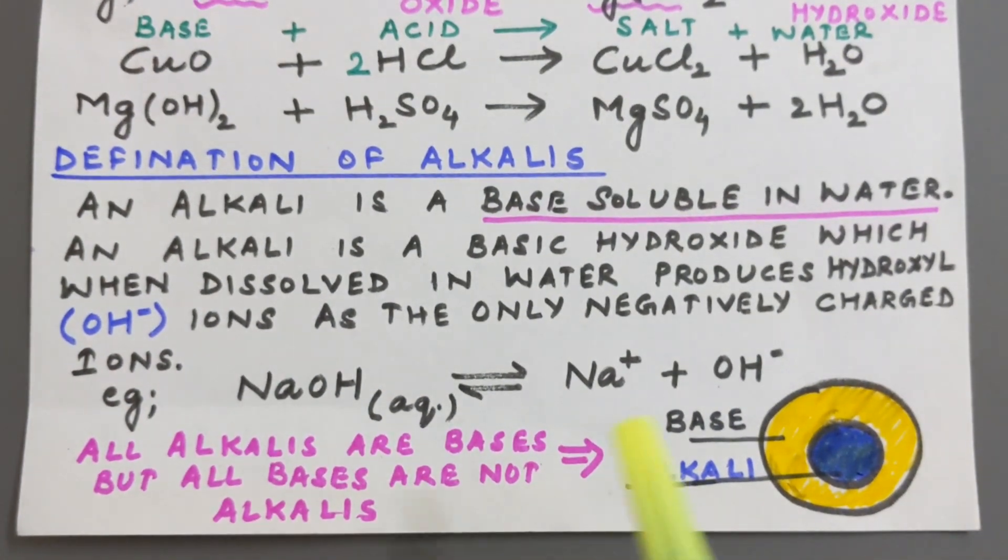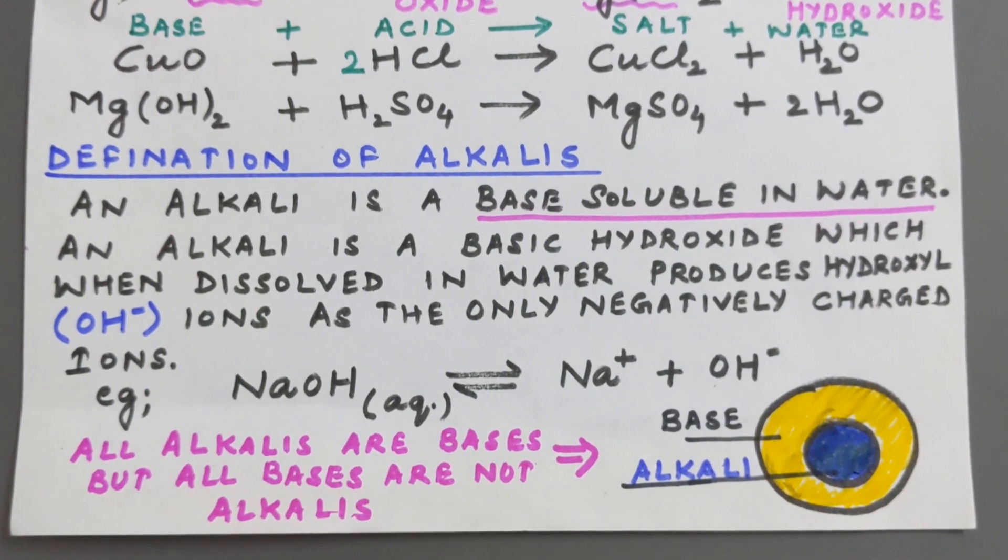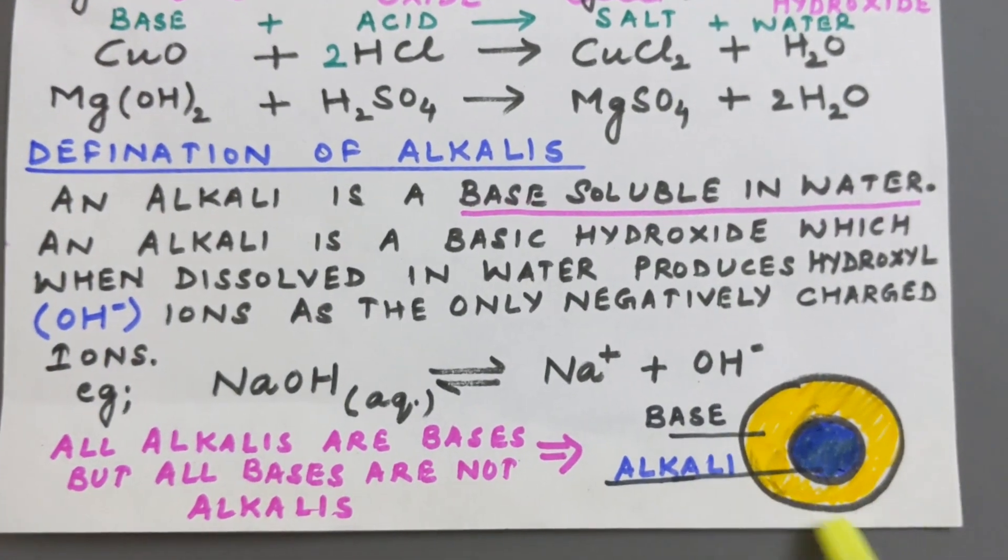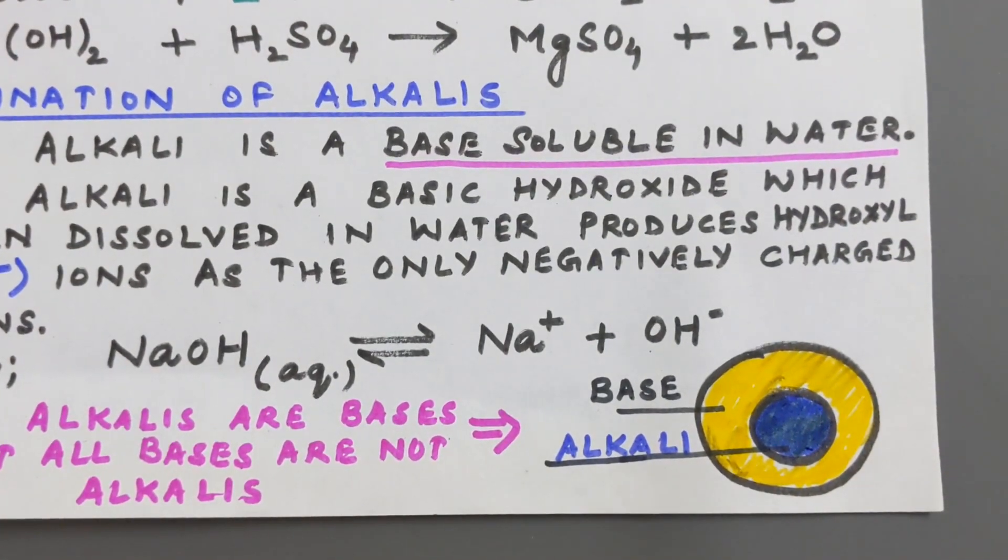So all alkalis, all alkalis please remember are bases, but all bases are not alkalis. Now to explain this, it can be explained with the help of a Venn diagram. Please remember all the bases are not soluble in water.